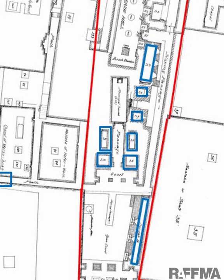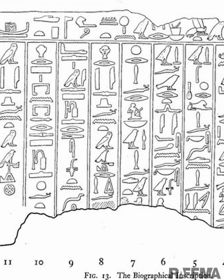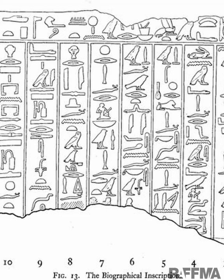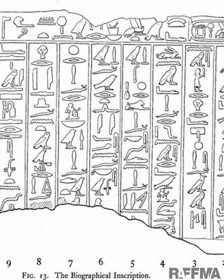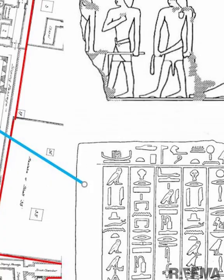Rawer is perhaps most famous for having a unique biographical text that was discovered in his tomb. This describes how King Nefer-Irkare accidentally struck Rawer with his scepter in the course of a festival procession. Because of the king's ritual power in that moment, this accident apparently posed a danger to Rawer, so much so that the king then had to stop everything and cure Rawer magically on the spot. Additionally, the king then ordered a permanent record of the incident to be made, a copy of which was the one found in his tomb.